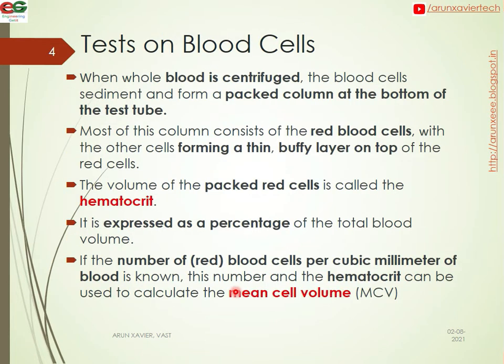We will discuss different types of tests on blood cells. When the whole blood is centrifuged, the blood cells sediment and form a packed column at the bottom of the test tube. Most of this column consists of red blood cells, with other cells forming a thin buffy layer on top.